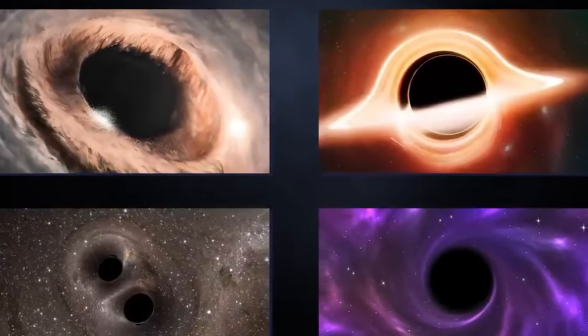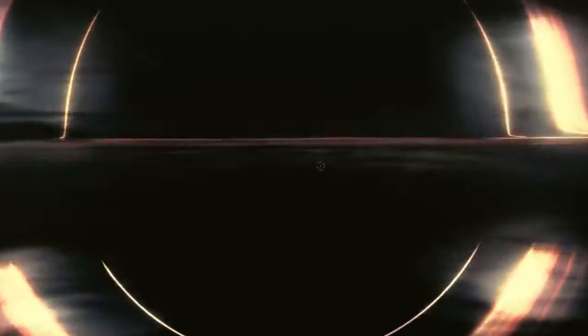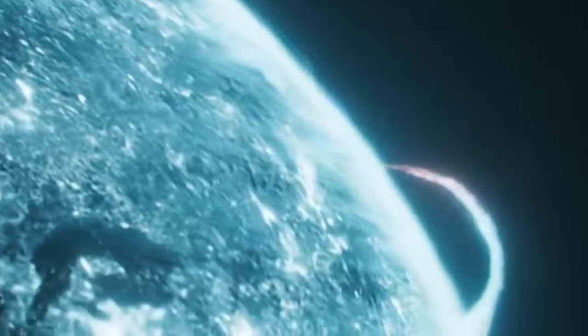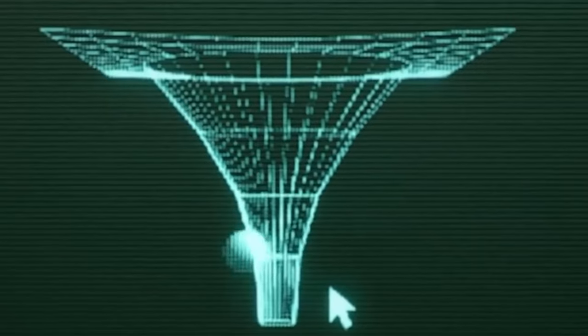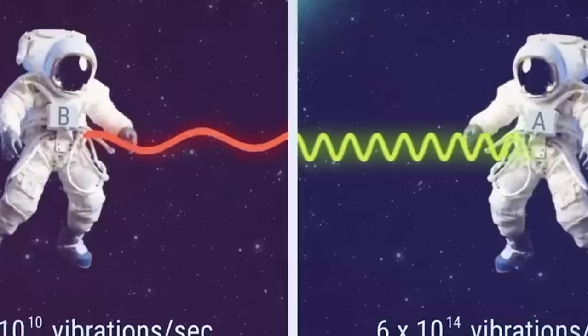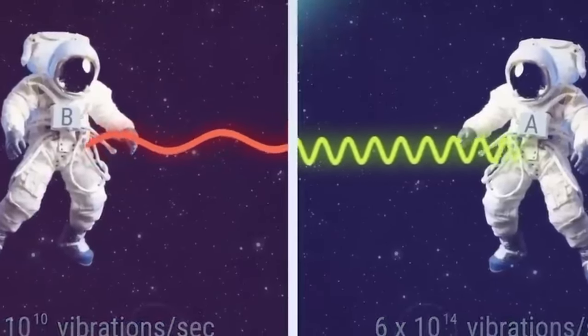This gravitational lensing effect has become a powerful tool in astrophysics, enabling astronomers to study distant and faint objects that would otherwise be too dim to observe directly. By analyzing the lensing patterns, scientists can infer crucial information about the mass, shape and distribution of matter in the vicinity of the black hole.